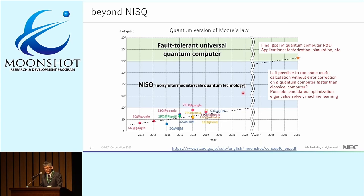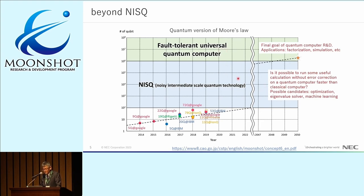We are now in the NISQ era, where 100-qubit-scale quantum chips are investigated both in theory and experiment, hoping to run useful calculations without error correction faster than classical computers. In this moonshot project, our goal is to go beyond NISQ and realize a fault-tolerant universal quantum computer.